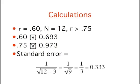This can be done from the formula shown previously, a table, or an online calculator. The values are 0.693 and 0.973 respectively. The standard error of z' for n equals 12 is 0.333.